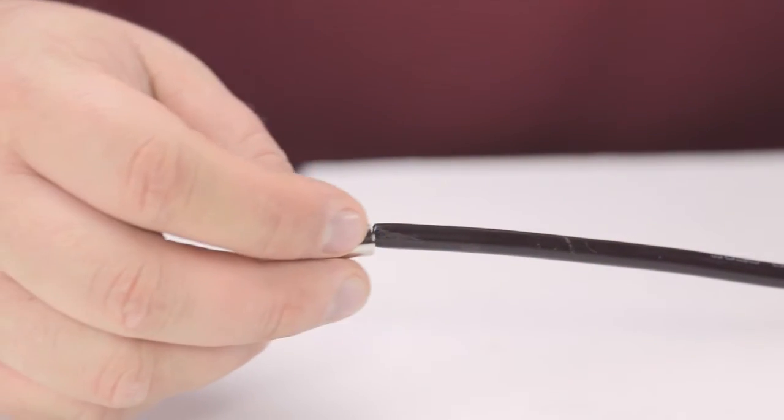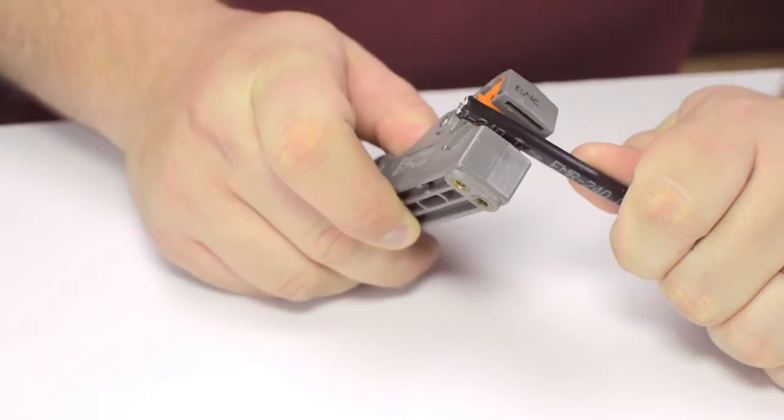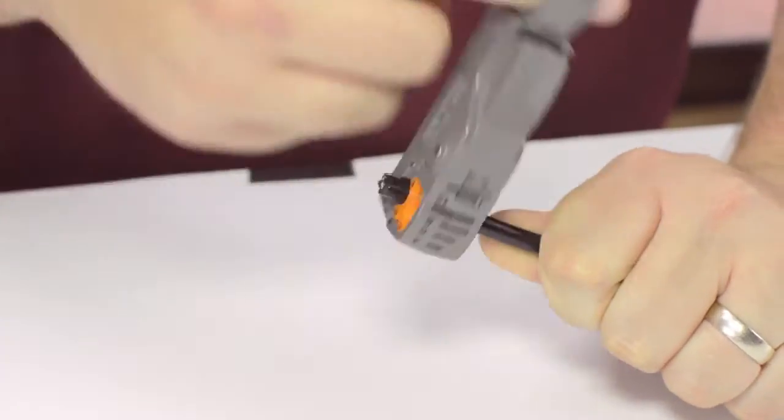Start by inserting the ferrule over the outer jacket of the cable. Then using your cable stripper, strip back the outer jacket and dielectric.